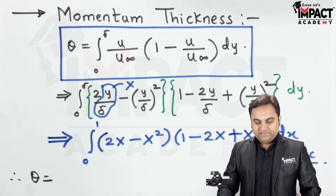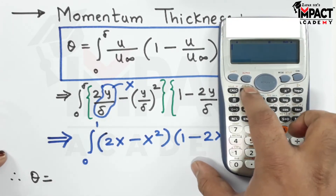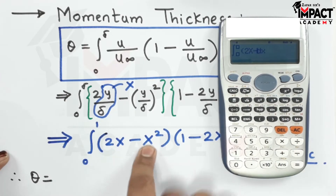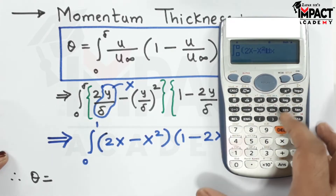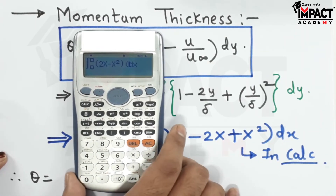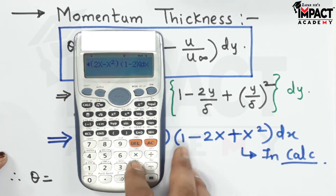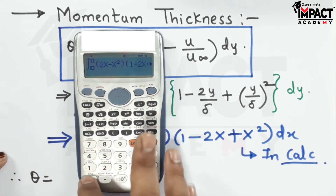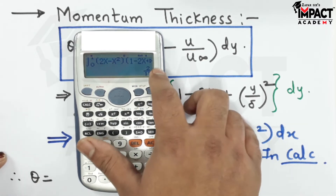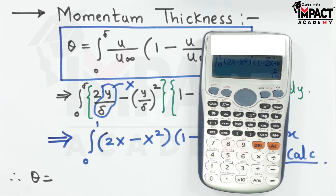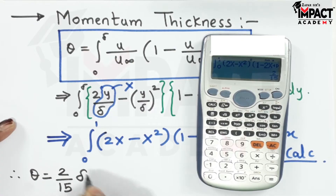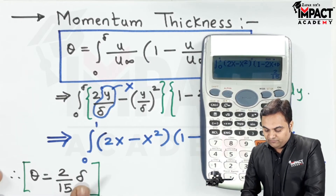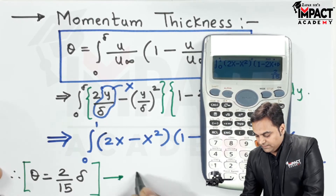On the calculator, enter the integration sign, write the function (2x − x²) times (1 − 2x + x²), set limits 0 to 1, and press equals. The answer is 2/15. Therefore, momentum thickness theta = 2δ/15, where δ is the boundary layer thickness.